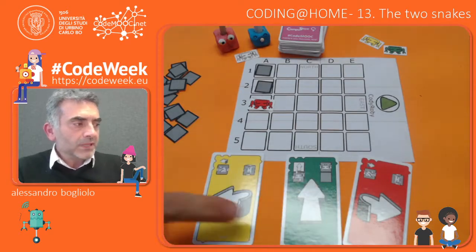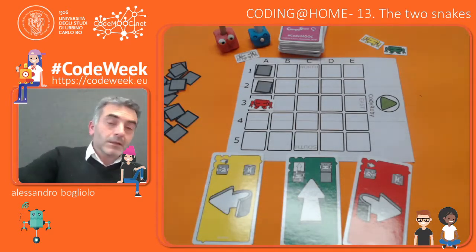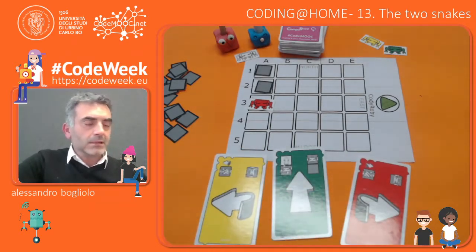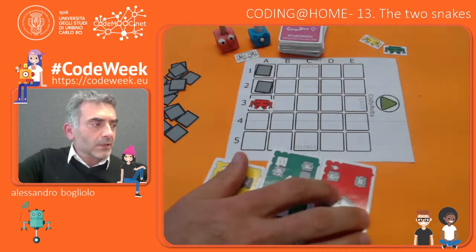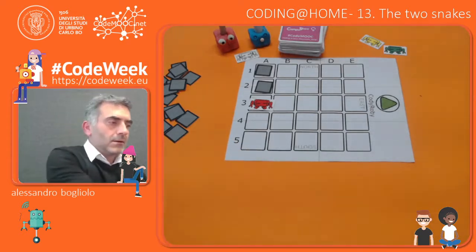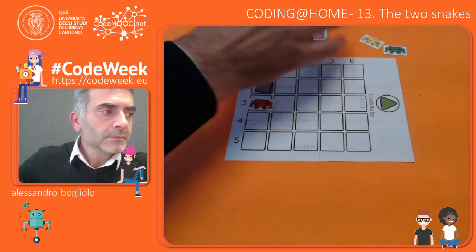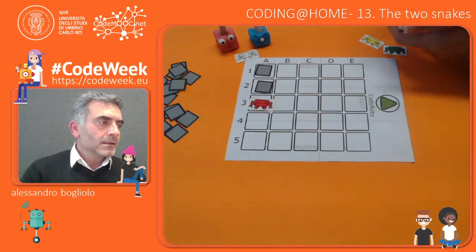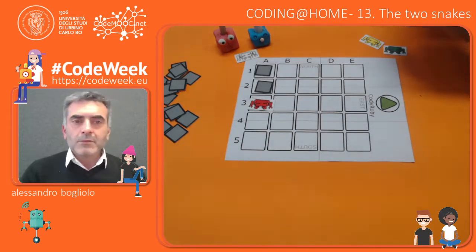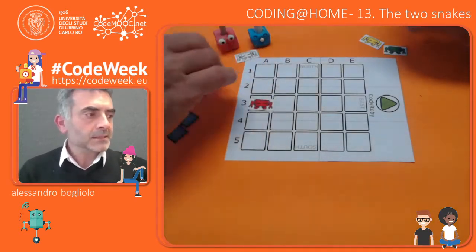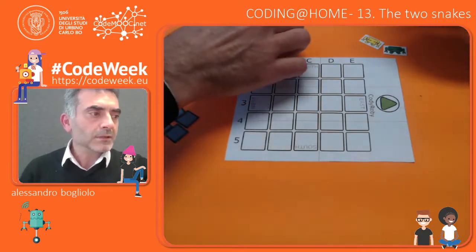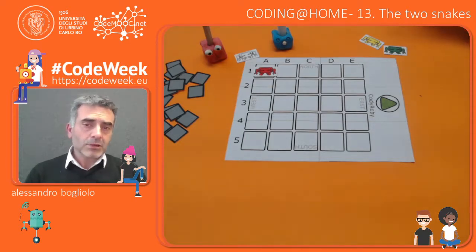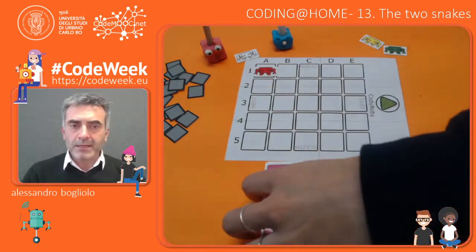We will play with the cards representing our instruction set: move forward, turn right, and turn left. There is a deck of cards containing 40 cards. Anna, can you please shuffle the deck? Thank you. And we will play with two pieces instead of the usual robots. You can use any kind of character piece in order to play this game.